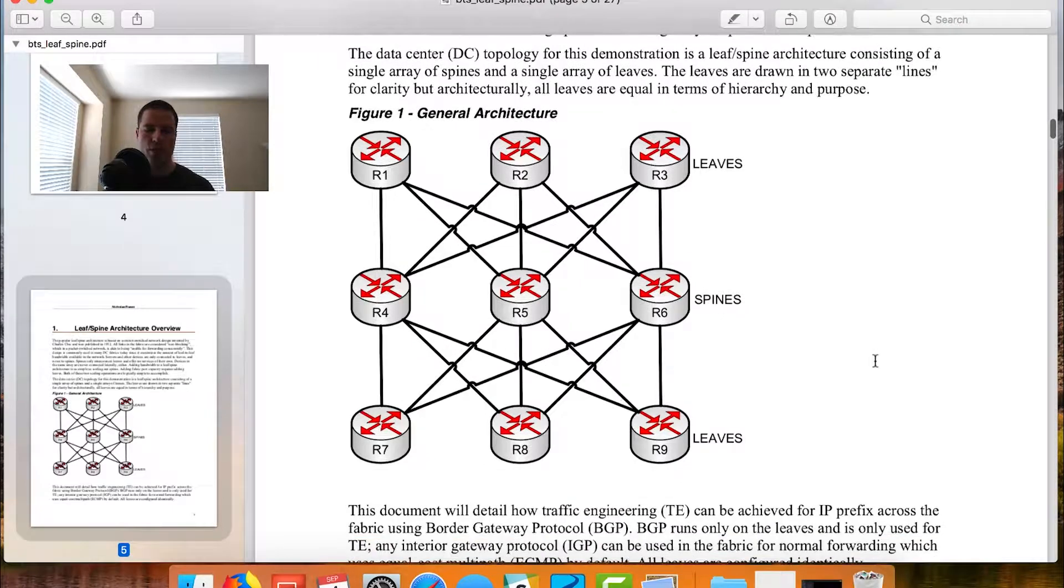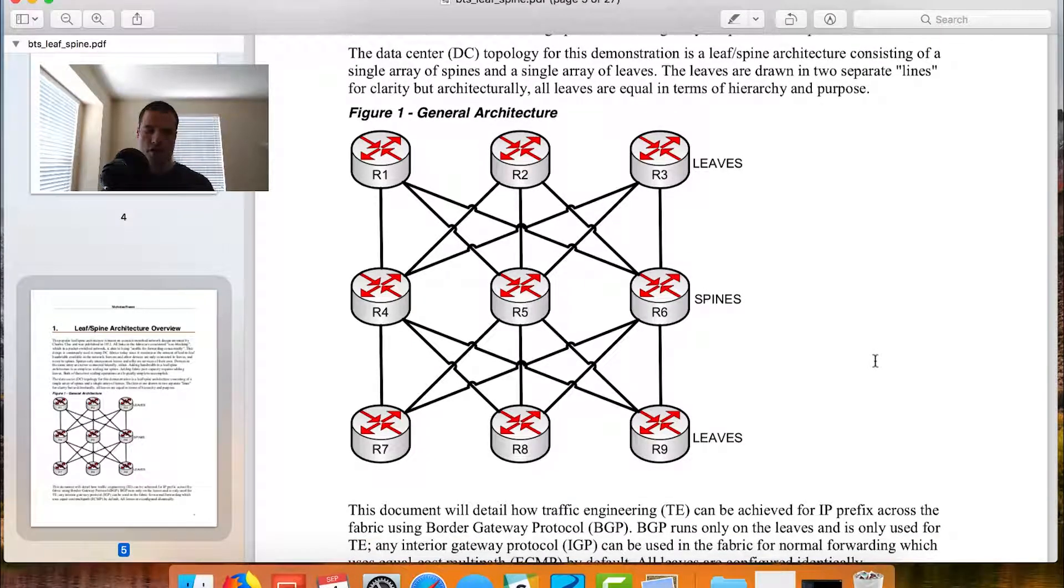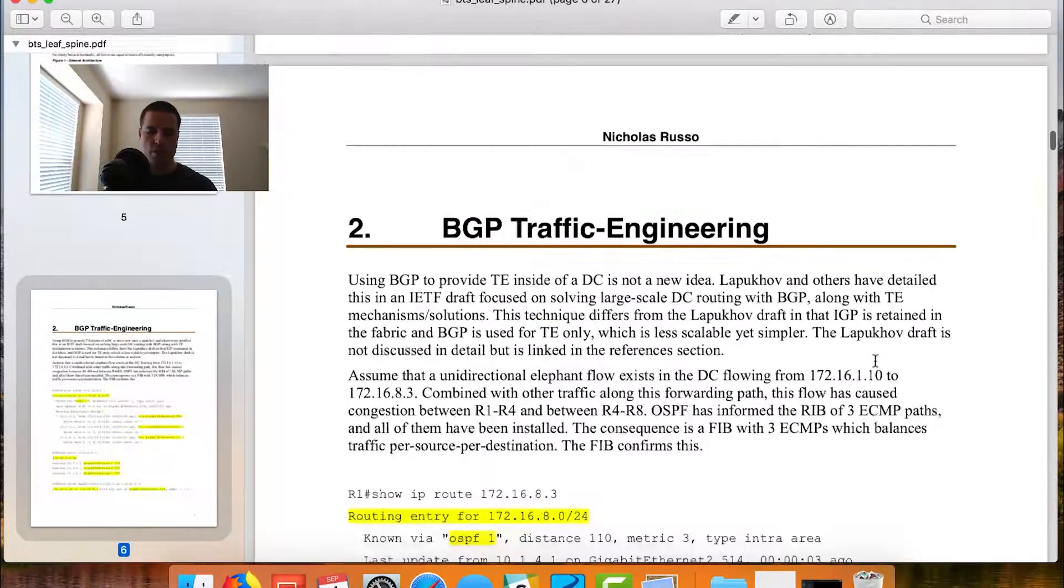I'm going to scroll through this document rapidly until we get to some of the overview stuff. I don't want to read you a book because you can just read this on your own. We'll focus on the diagrams. I'm showing just a picture of a generic leaf-spine network. I have spines in the center here, and specifically we're talking about a three-phase leaf-spine network. Leaves is where my hosts connect like servers. Spines are transit only, and there are no lateral links at any tier. Between R1 and R2, there's no link. Between R4 and R5, there's no link, etc.